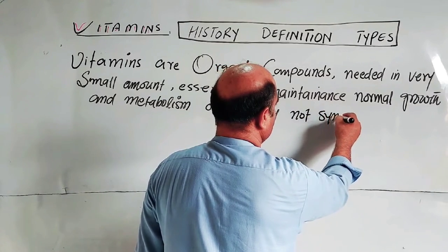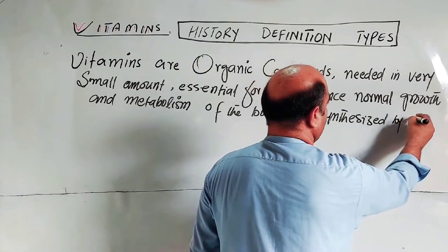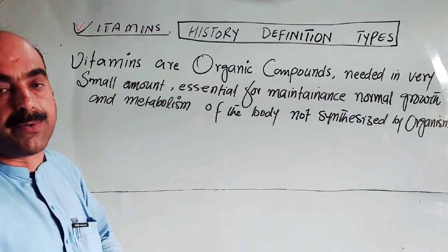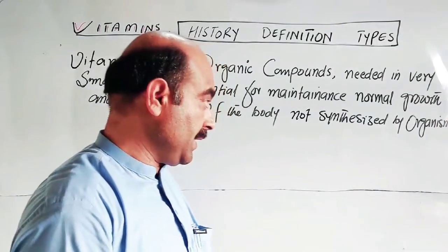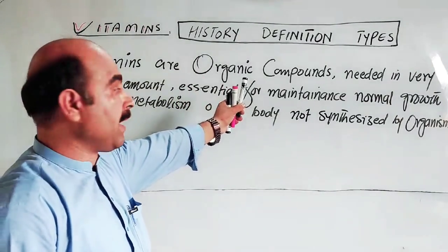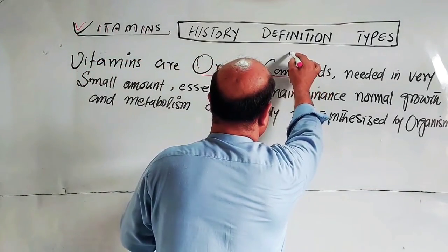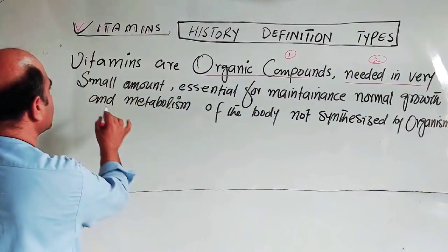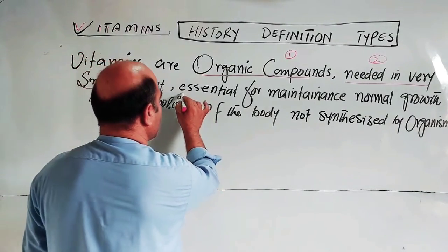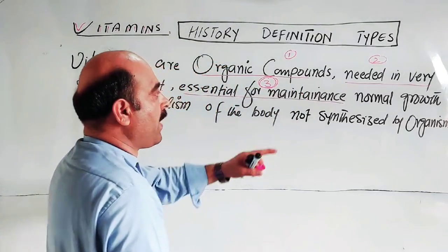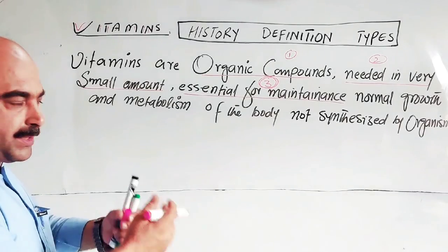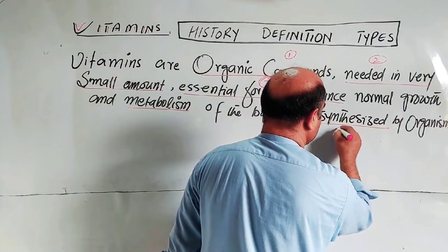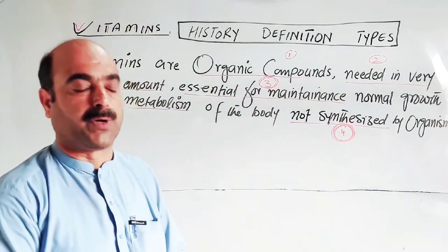Vitamins are not synthesized by organisms or living things — by the animal body or the human body — except vitamin D and vitamin K. These are organic compounds containing carbon and hydrogen, needed in very small amounts but essential for normal general growth and metabolism of the body.